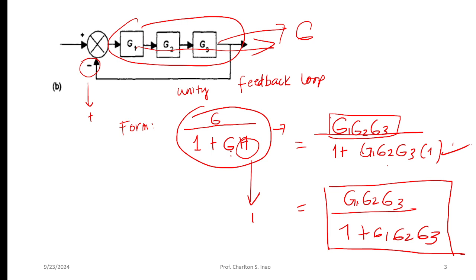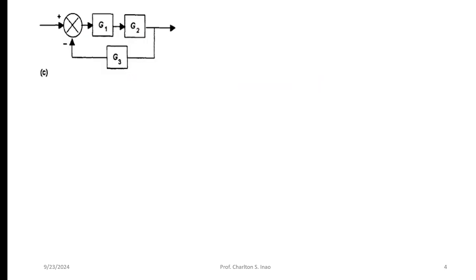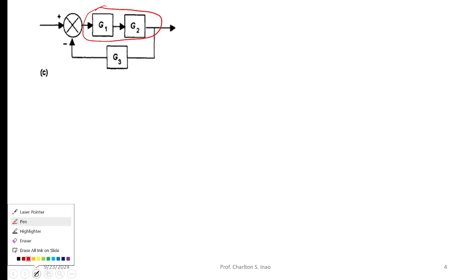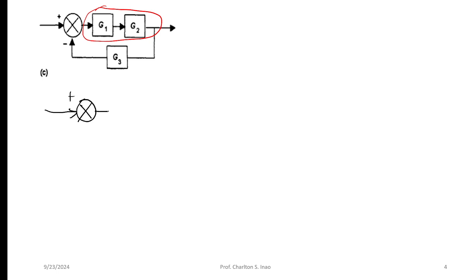Moving to the next problem. We are given a form with only two blocks instead of three. We simplify by multiplying the blocks first — there is a summing junction with a positive signal, so this becomes one block.